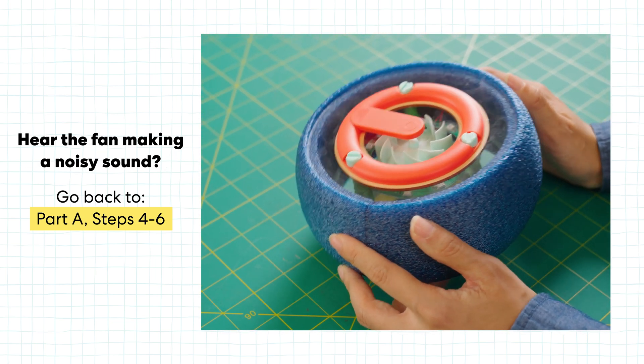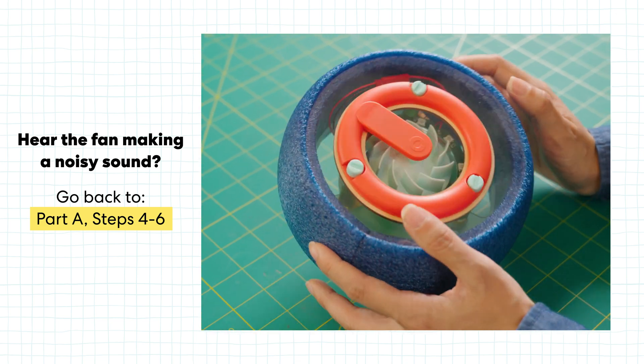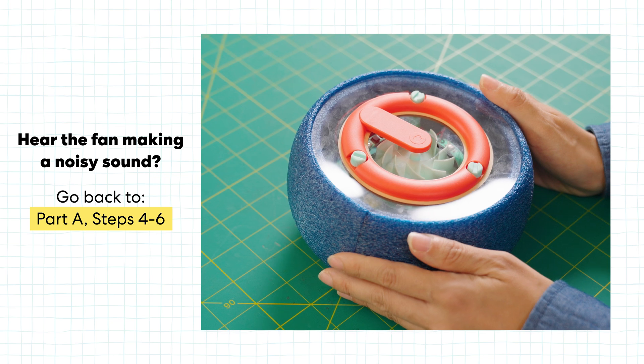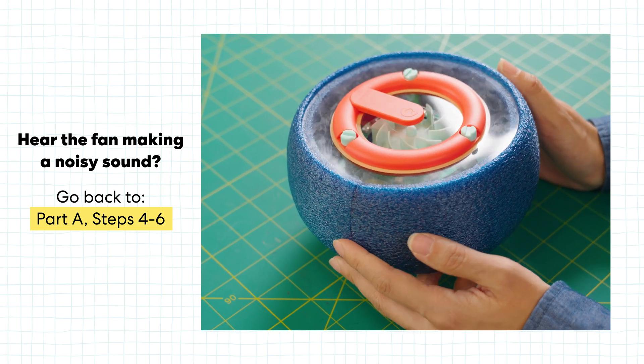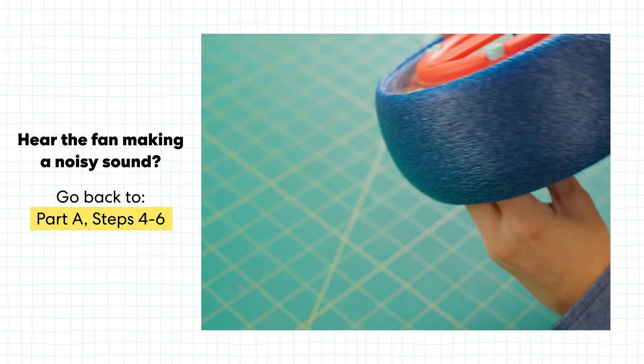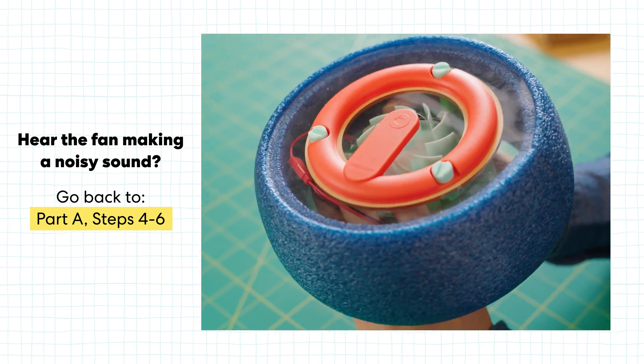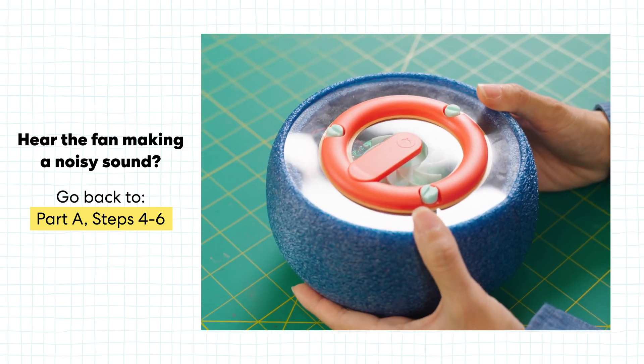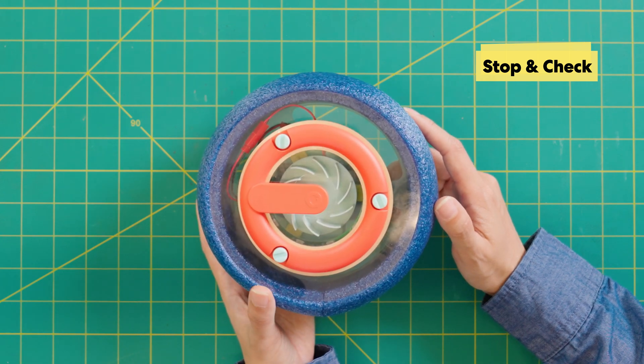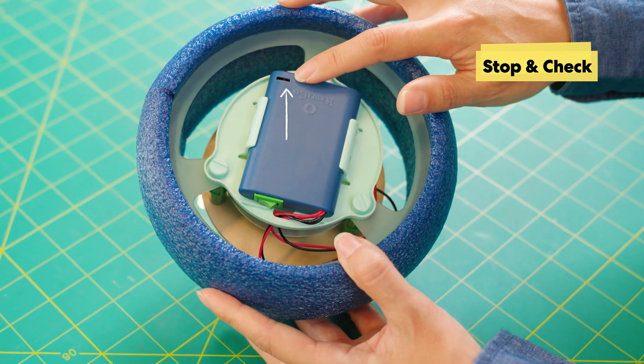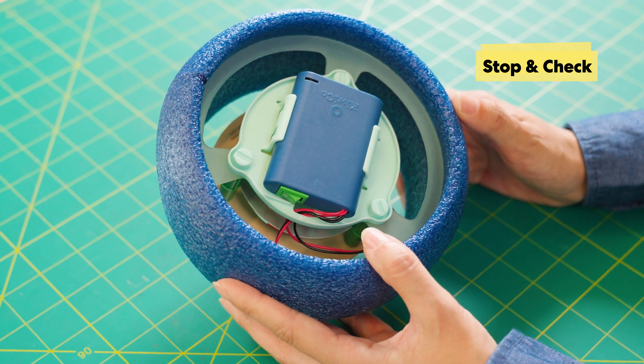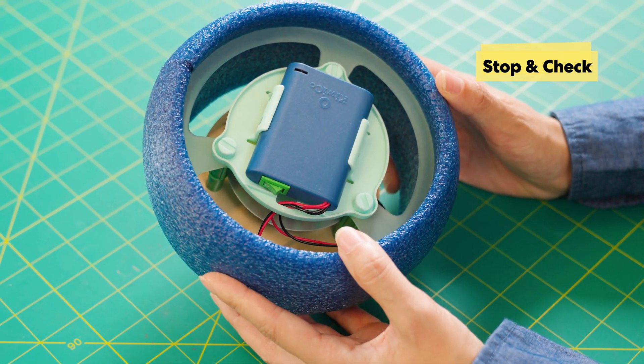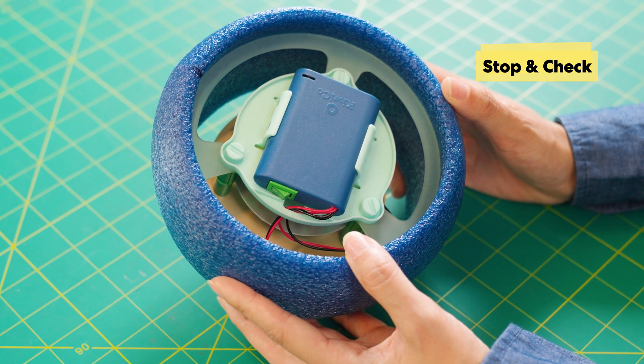If the fan rubs against the clear cover or makes a noisy sound, you're going to check part A, steps four to six. One way that I can do it from here is you can actually just reach your hands in there and kind of push down the motor a little bit and see if that helps. Make sure the battery is off. If the fan or lights don't turn on, make sure the tab is pulled out of the battery pack, right there, then check that all the wires are fully connected. If that doesn't work, ask your grown-up assistant to check that the batteries are still in place inside.